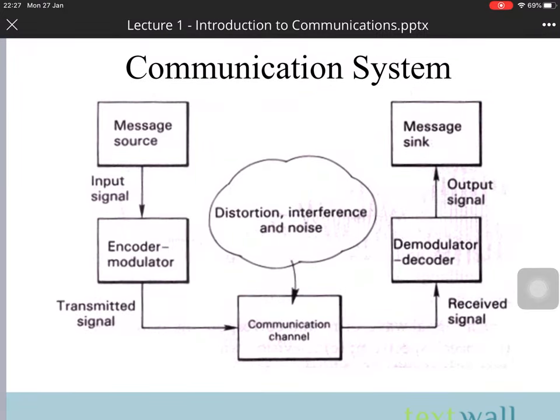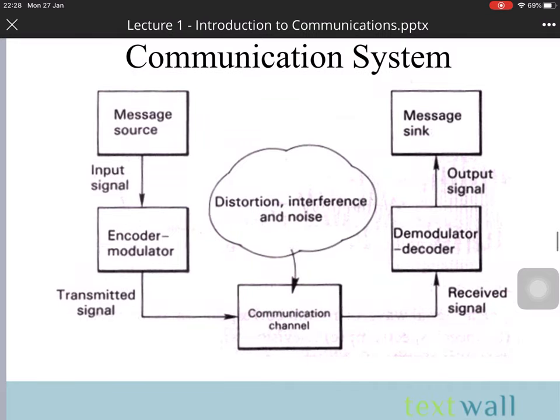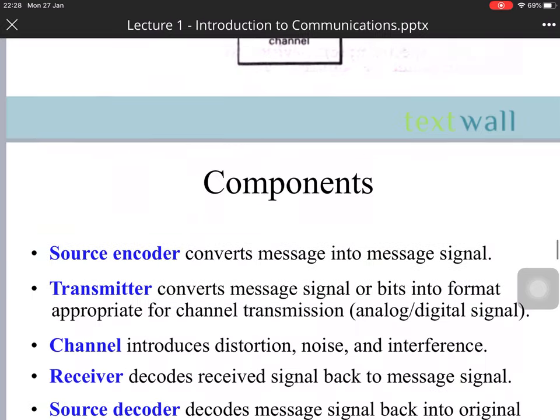The communication system has five or six blocks. The first is the information source. Then we go to the encoder or modulator. The input data becomes a transmitted signal. It then enters the communication channel, where distortion, interference, and noise may occur. We then have the received signal going to the demodulator and decoder, and finally the signal is output to the message sink.